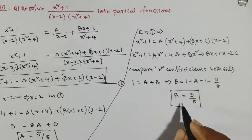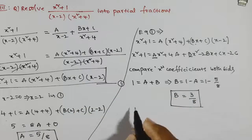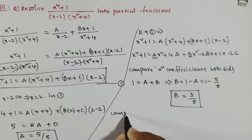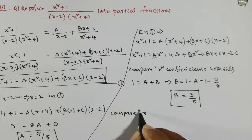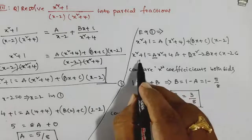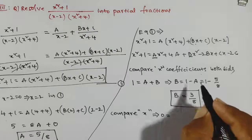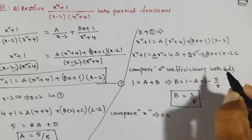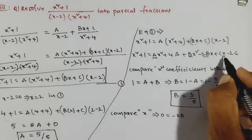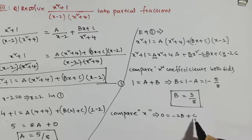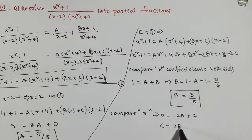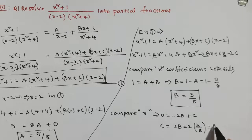Now we find the value of C by comparing the x coefficient on both sides. The left-hand side has no x term, so it equals 0. On the right-hand side the x coefficient is −2B + C. Sending 2B to the left-hand side: C = 2B. We know B = 3/8, so substituting gives C = 2 × 3/8 = 3/4. This is the required value of C.